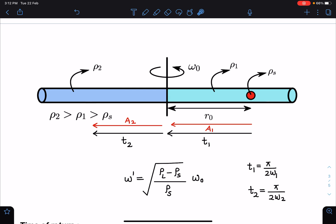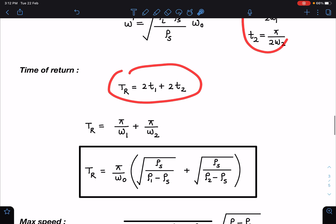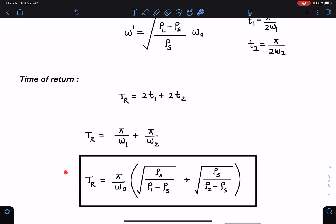So time of return from here we can say t1, t2, t2, and t1, so it will become 2 t1 plus t2. When I substitute the value of t1 and t2, I am going to get this as the answer: pi by omega 0 times root of rho solid by rho 1 minus rho s plus rho s by rho 2 minus rho s.